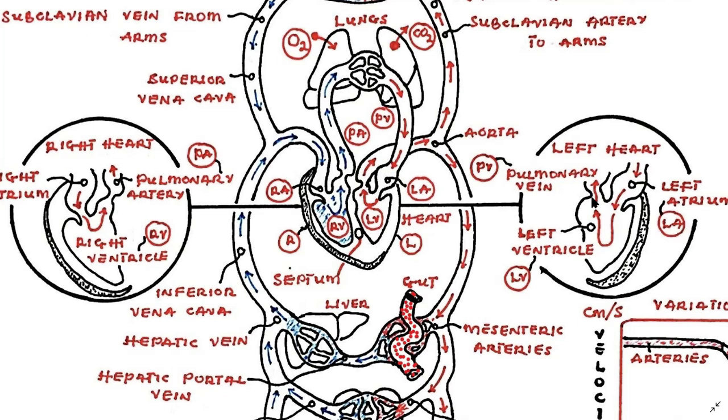The right heart pumps blood to the lungs, where blood takes up oxygen and gives off carbon dioxide. The left heart pumps blood to the tissues of the body, where it gives up fresh oxygen and picks up carbon dioxide.